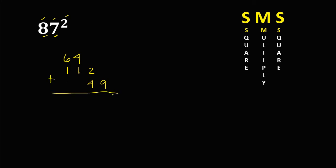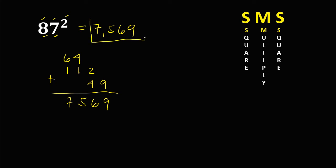Then adding: we have 9, then 6, then 4 plus 1 is 5, then 6 plus 1 is 7. Therefore, 87 squared is 7,569.